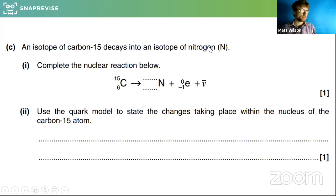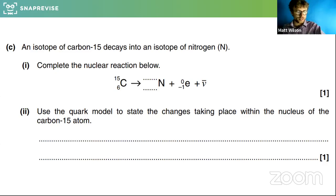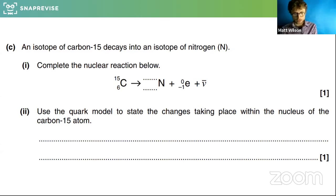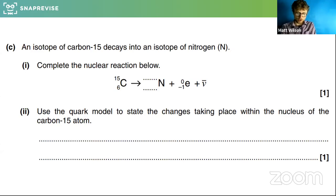Let's slam in and have a go at a question. An isotope of carbon-15 decays into an isotope of nitrogen — complete the nuclear reaction below. What's the rule for how to balance nuclear equations? Does anyone know how to balance nuclear equations?